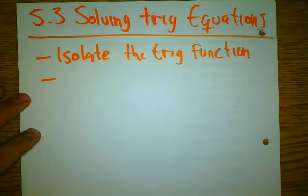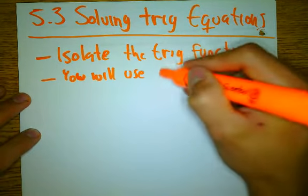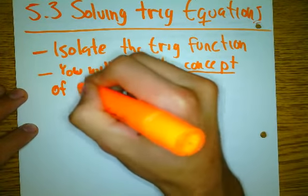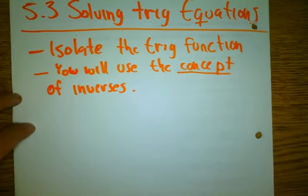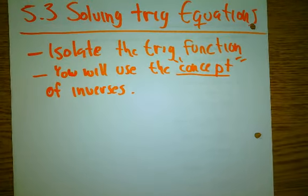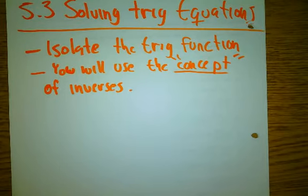Once you isolate the trig function, you will use the concept of inverses. When I say the concept, I mean that we're not going to be using inverses with the restrictions. However, you know the restrictions for inverses. Since we're only using the concept, remember that we can use it to find any angle with any rotations, on the positive direction, on the negative direction. So, we're going to be using only the concept of inverses — good news, because you don't really have to remember the restrictions.